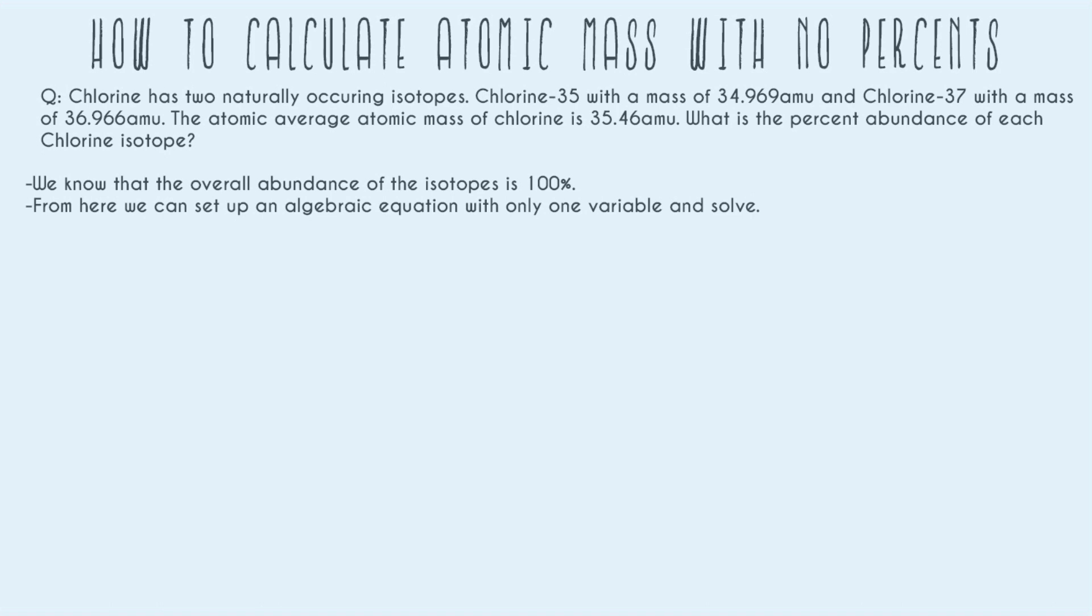The problem reads: chlorine has two naturally occurring isotopes. All that means is that we only have to care about two isotopes. Chlorine-35 with a mass of 34.969 AMU and chlorine-37 with a mass of 36.966 AMU. The average atomic mass of chlorine is 35.46 AMU. What is the percent abundance of each chlorine isotope?